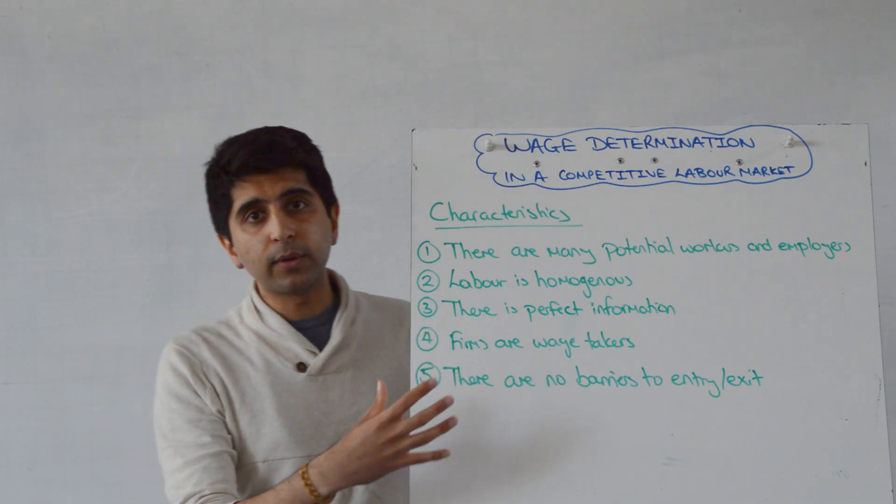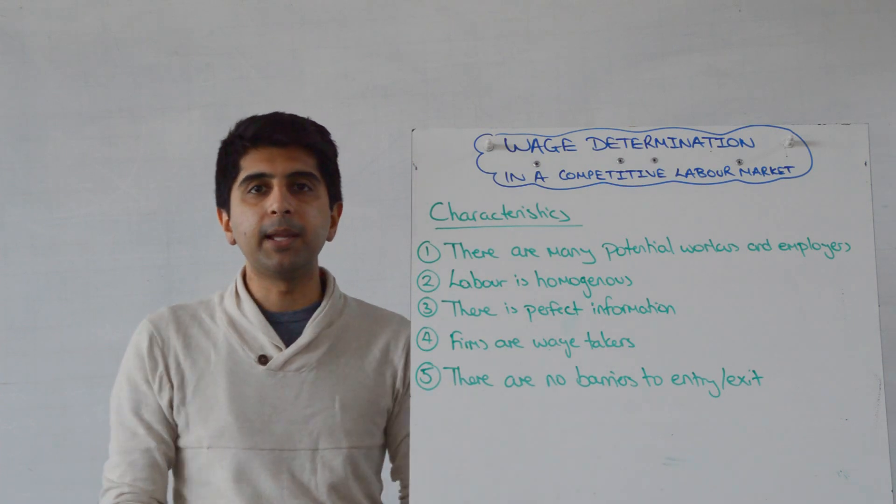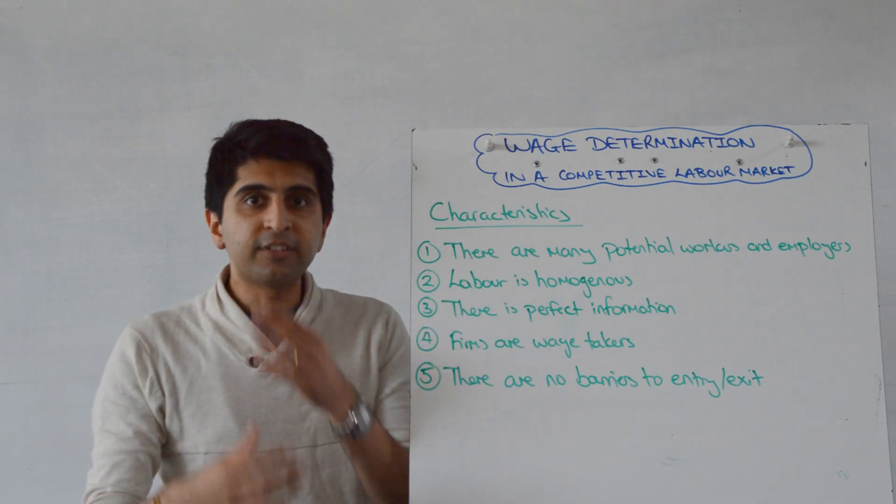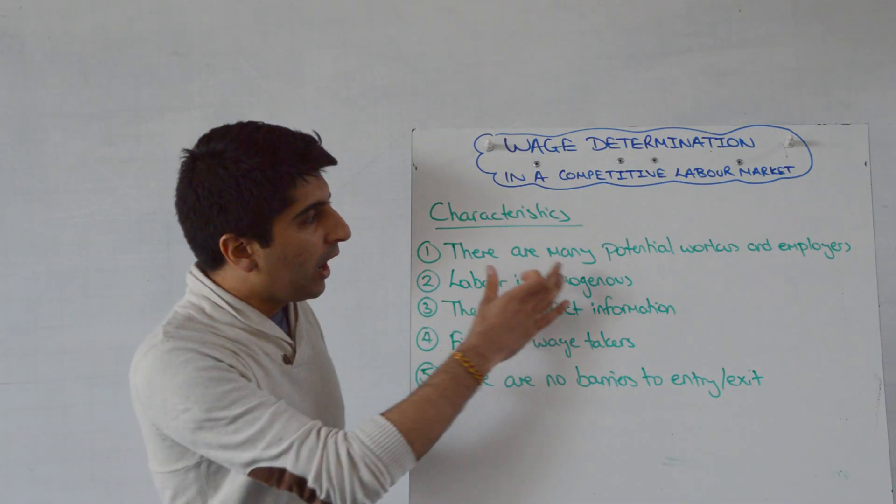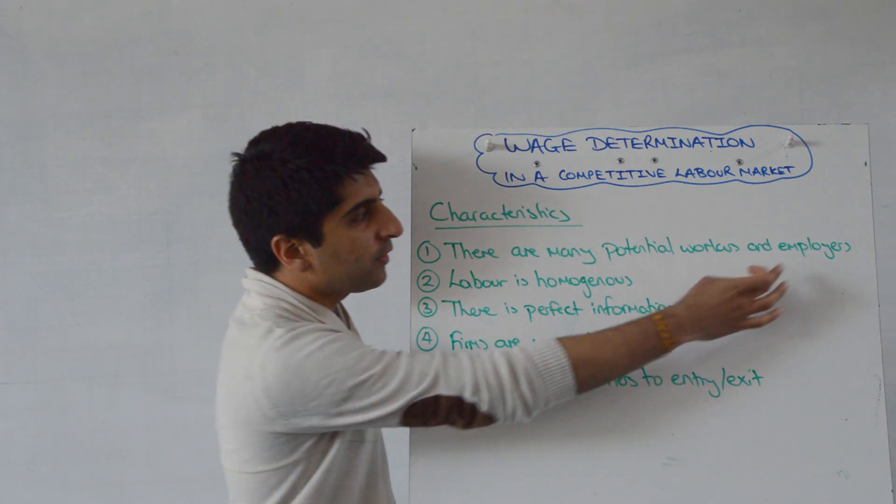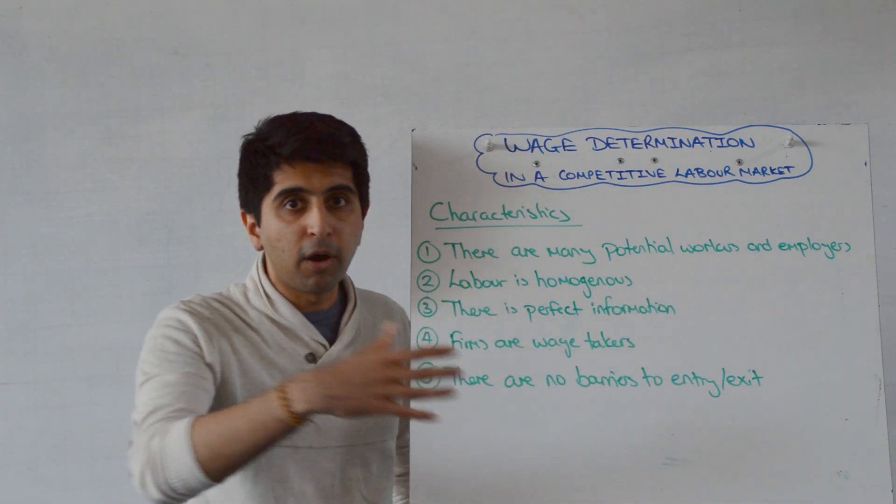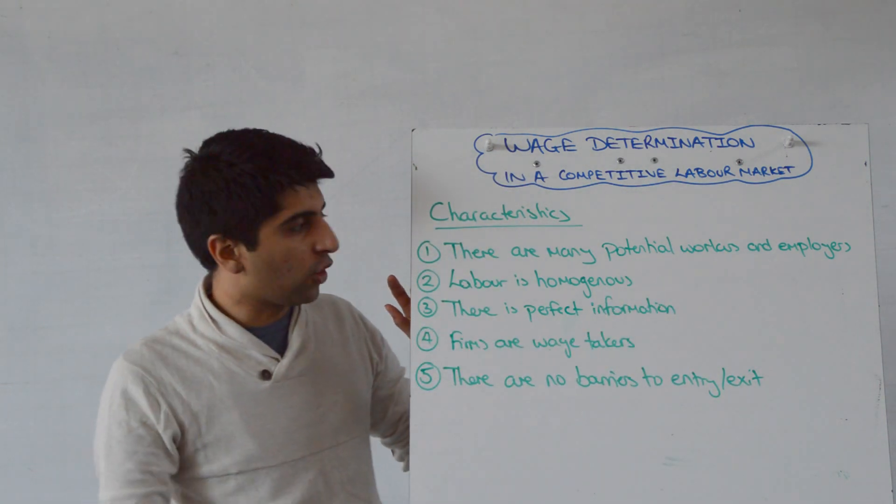These are very easy to understand because they are just like the characteristics of a perfectly competitive product market, but now it's applied to labour. So we start by saying that there is a large number of potential workers and employers, lots of firms out there that are willing and able to hire workers and a huge number of actual workers out there looking for jobs.